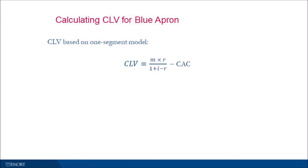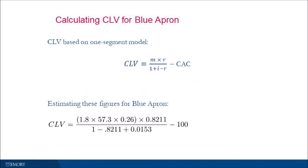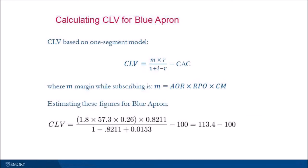If we use that in conjunction with estimates of the other key variables for Blue Apron, what we would infer is that the CLV of a customer at Blue Apron is approximately $13.40. They're spending about $100 to bring in a customer, so their CAC is $100 — that's what we see on the right-hand side of this equation. The margin while customers are alive breaks down into three main pieces: the order rate (how many orders customers place while alive), multiplied by the revenue per order, multiplied by the contribution margin — the variable profit margin on that incremental dollar of revenue. Incorporating the retention rate of 82% and our best estimate of Blue Apron's monthly discount rate gets us to that $13.40 figure.